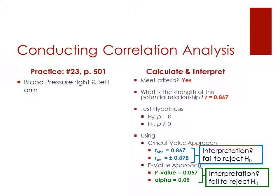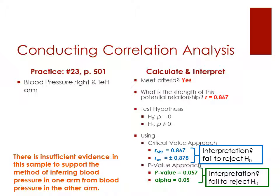In both cases, we're going to fail to reject the null. So if we're looking at that, keep in mind the null says that there's no relationship between these two, right? So here we can see 0.867, in fact, falls not outside the tail, but just inside 0.878. And 0.057 is, in fact, greater than the alpha value of 0.05. So we're going to fail to reject the null there as well.